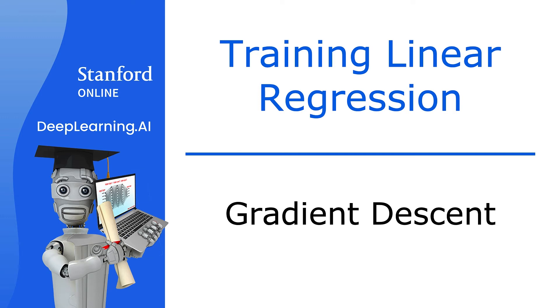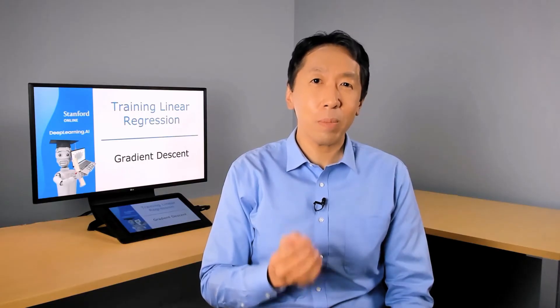Welcome back. In the last video, we saw visualizations of the cost function J and how you can try different choices of the parameters w and b and see what cost value that gets you. It would be nice if we had a more systematic way to find the values of w and b that result in the smallest possible cost J(w, b).